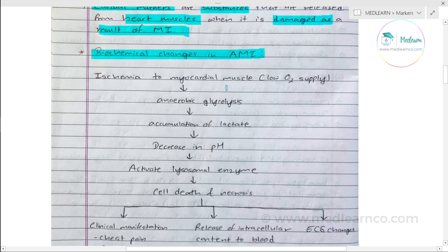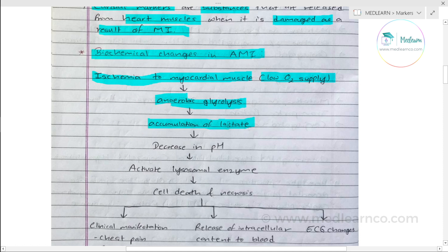Myocardial infarction is ischemia — there is low oxygen supply to the muscles. So the cardiac muscle switches from aerobic glycolysis to anaerobic glycolysis. The product of anaerobic glycolysis is lactic acid, which accumulates in the cardiac muscle.